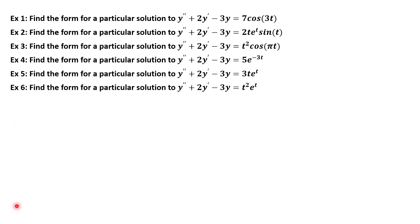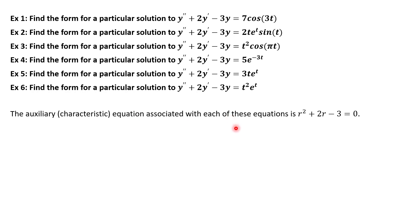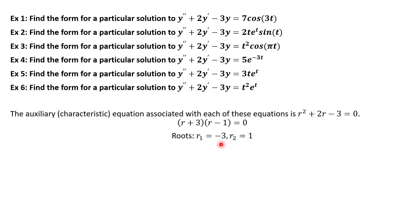We're going to try six examples first. They're all associated with the same auxiliary equation: r² + 2r − 3. We start by finding the roots — this factors very nicely and we get that the roots are r = −3 and r = +1.